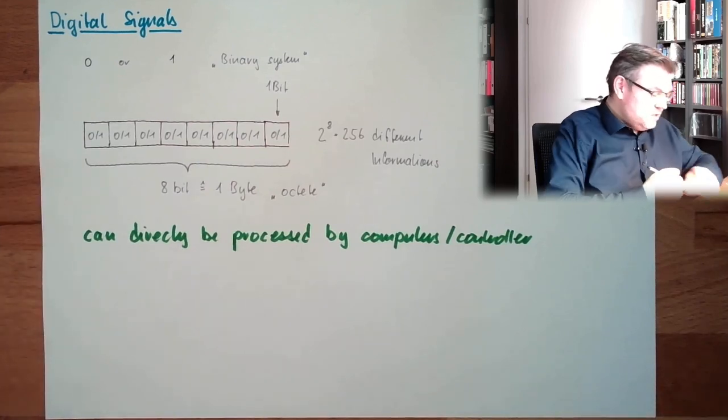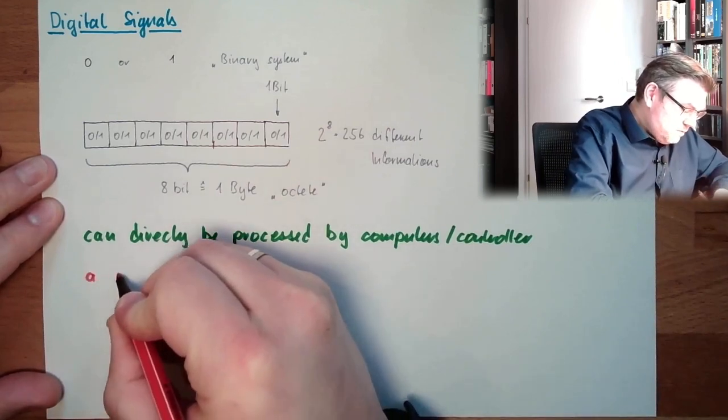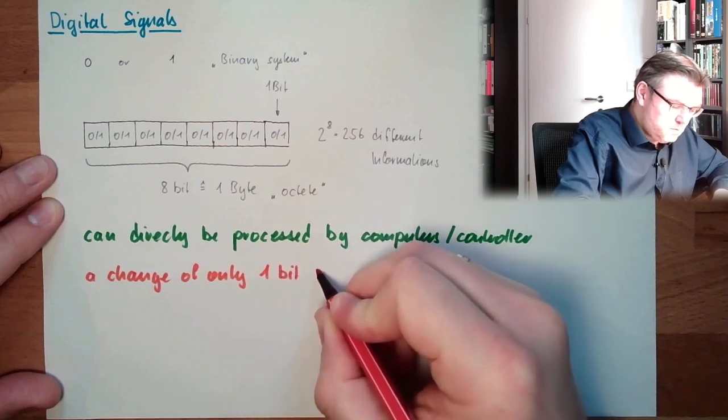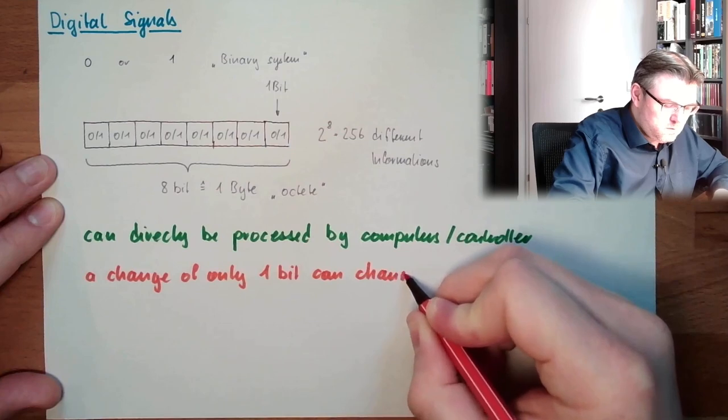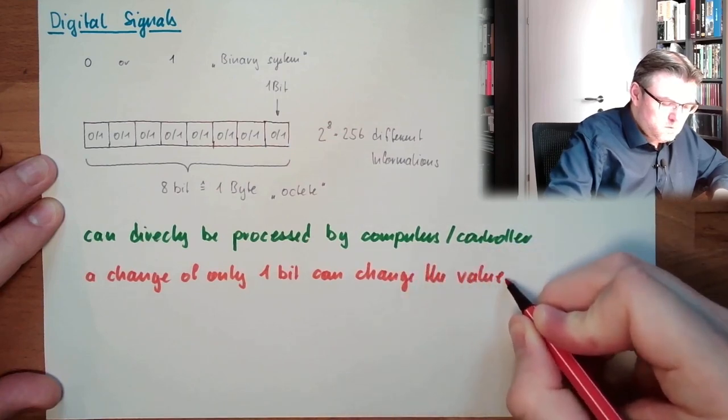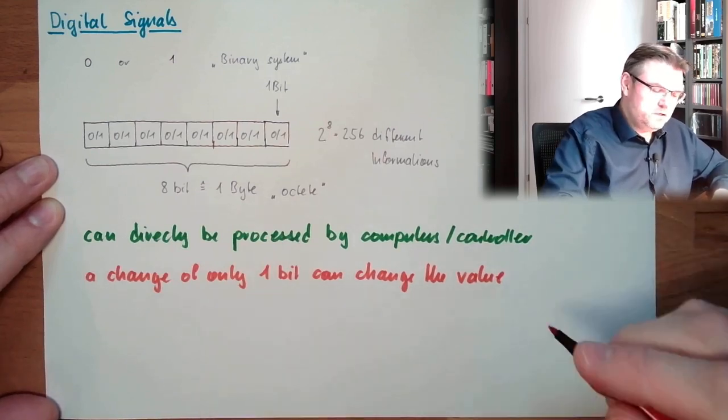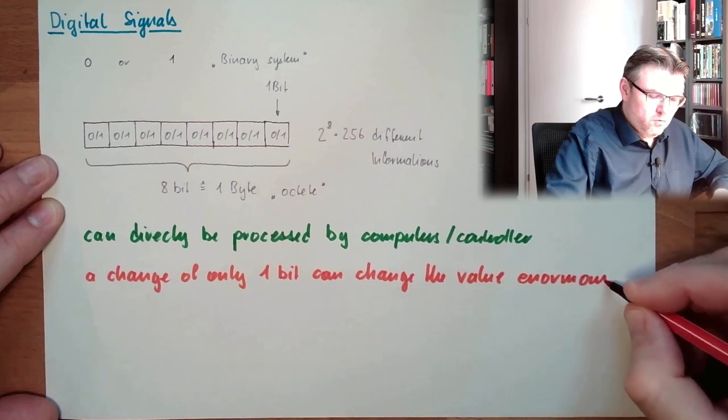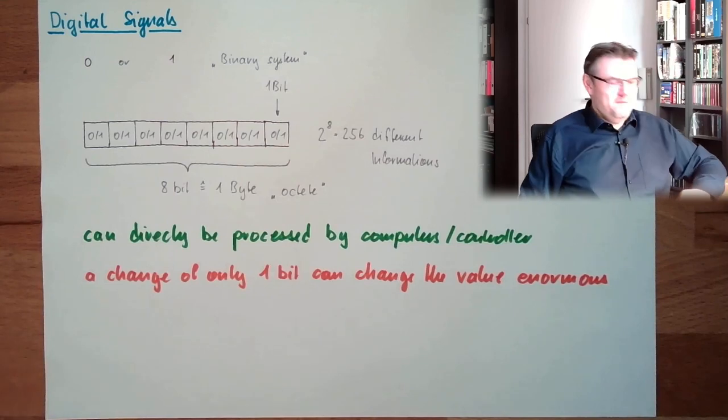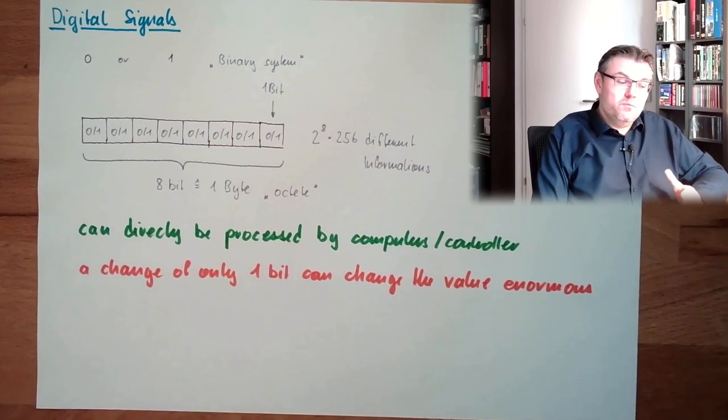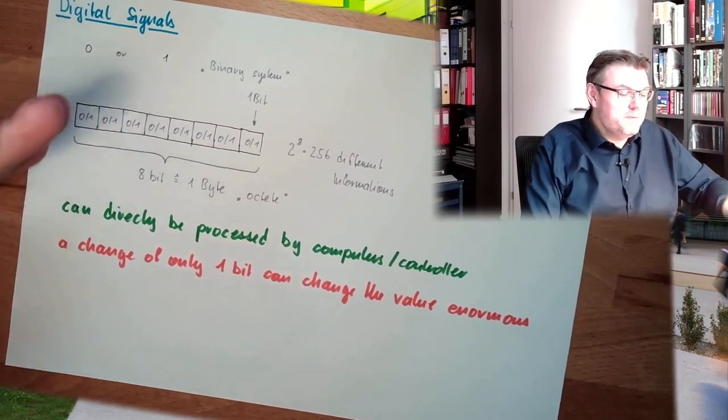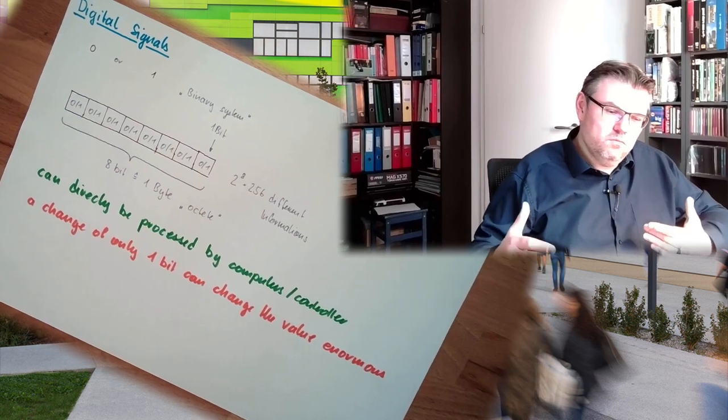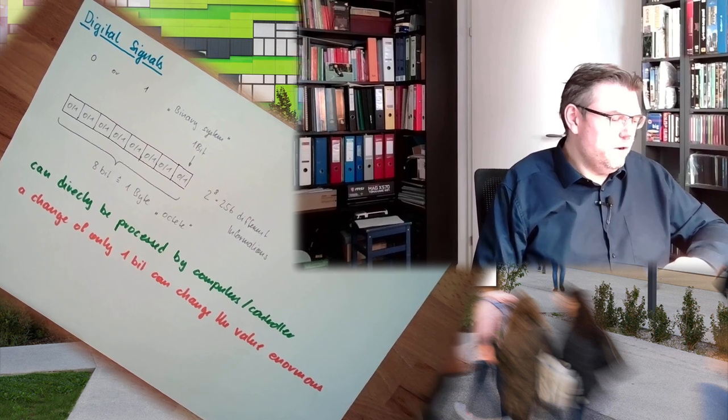So, a change of one bit can make a totally different value. Big, tremendous, enormous. Enormous change. By half, even. Half of the possible, the most significant bit, if we would understand this simply as a number, the most significant bit would already change the signal by half the full scale. Well, this is something, right?